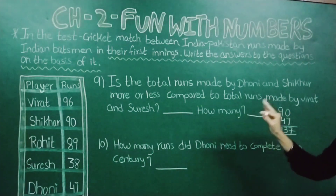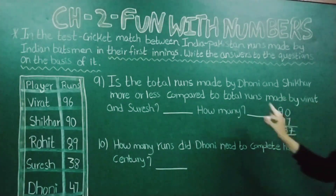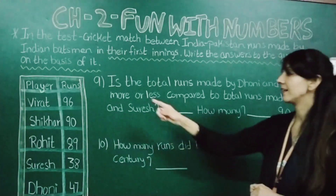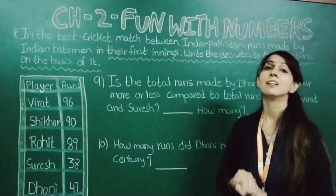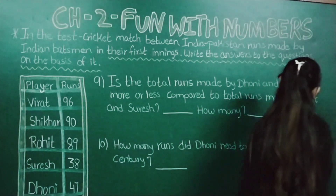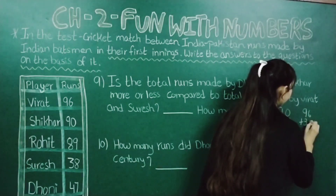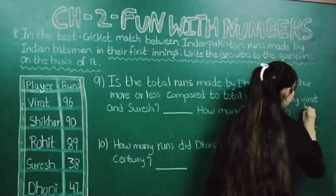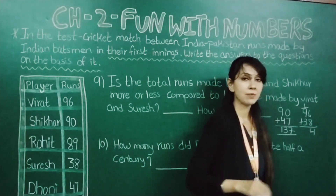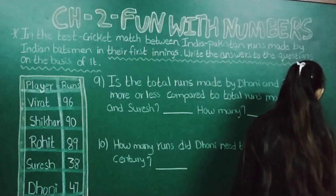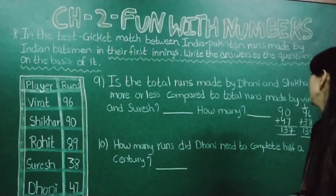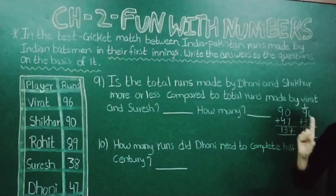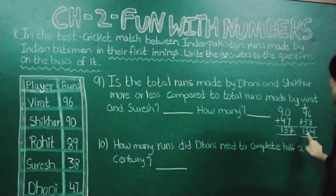Now we find the total runs made by Virat and Suresh. Virat has made 96 runs and Suresh has made 38 runs. So we add 96 plus 38 — 6 plus 8 is 14, write 4 carry 1 above 9, then 1 plus 9 is 10 and 10 plus 3 is 13. So total runs made by Virat and Suresh is 134.